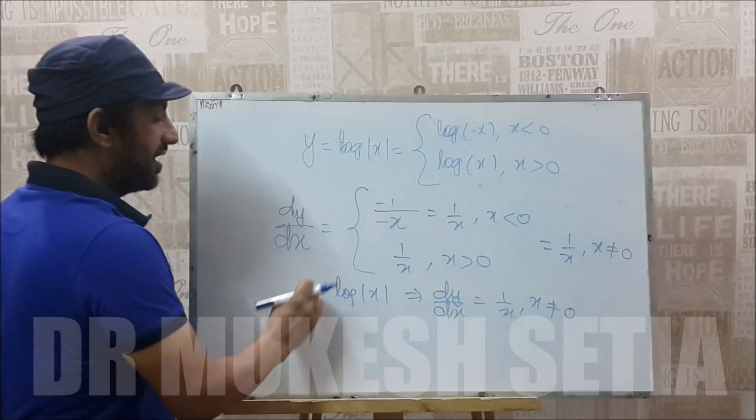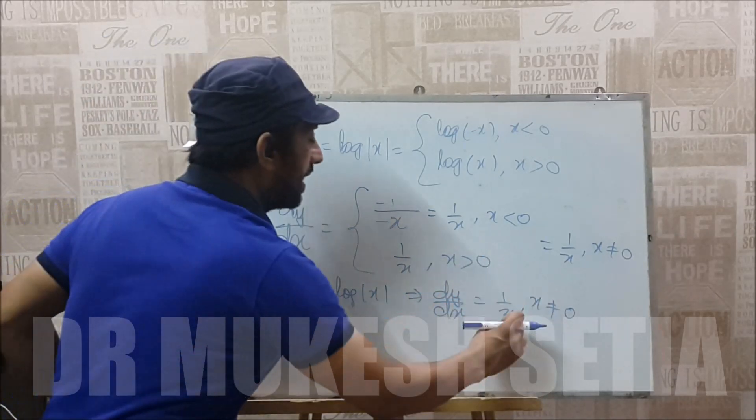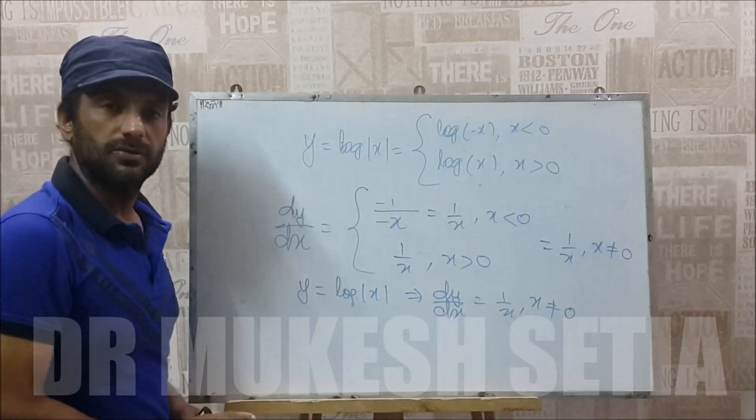So the derivative of y equals log mod x is 1 by x when x is not equal to 0. Thank you.